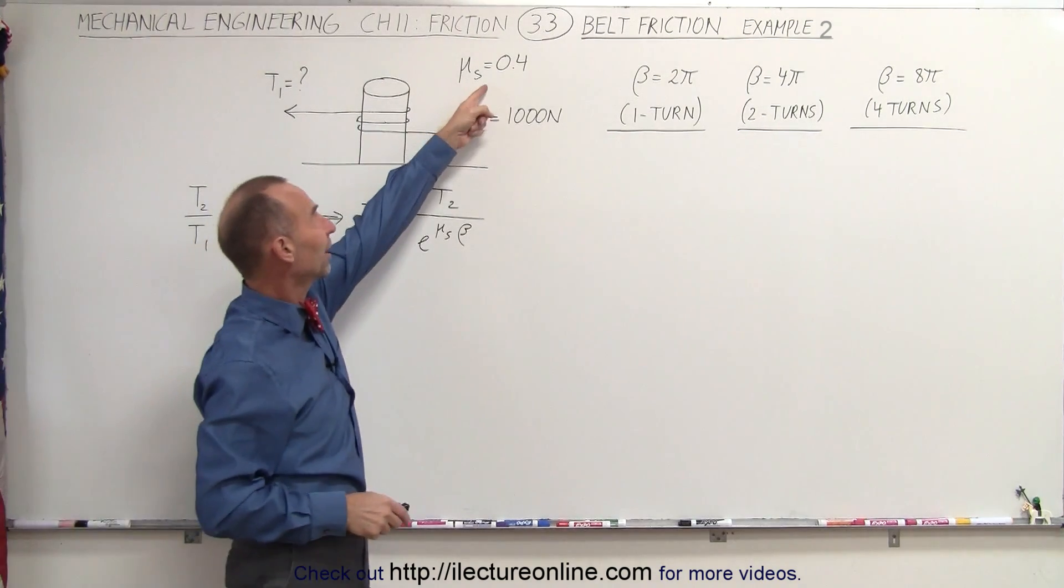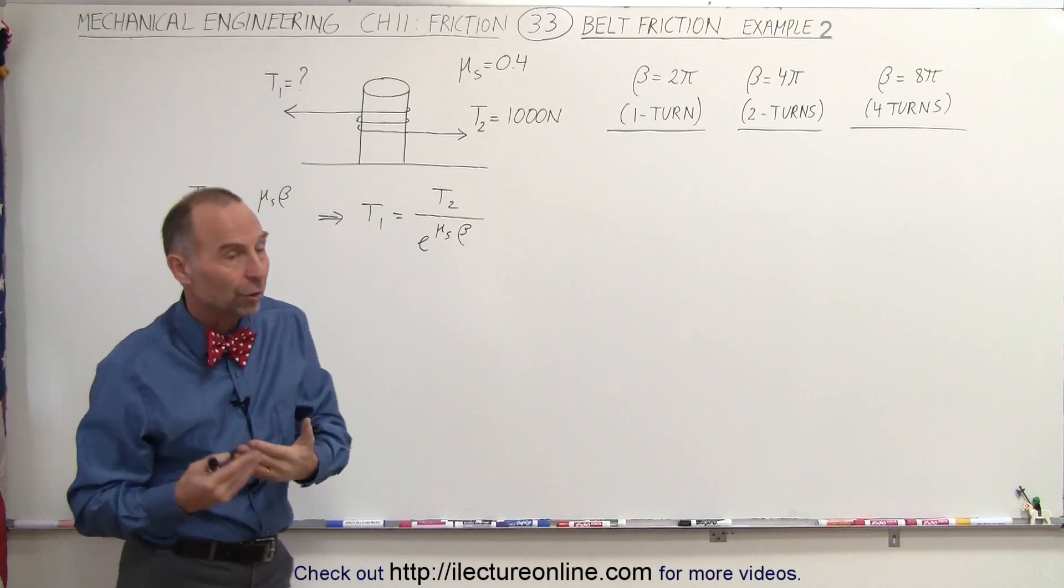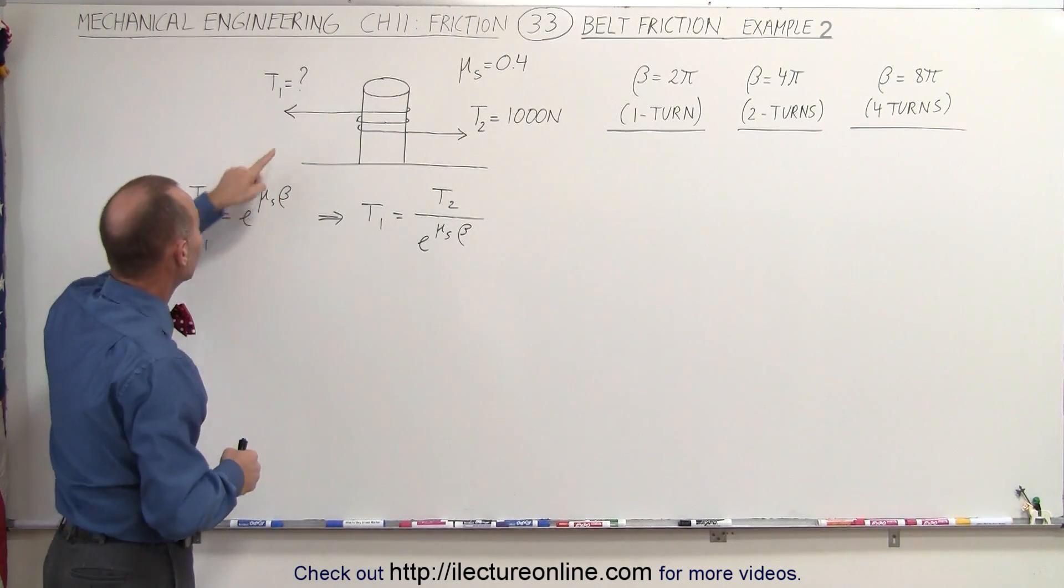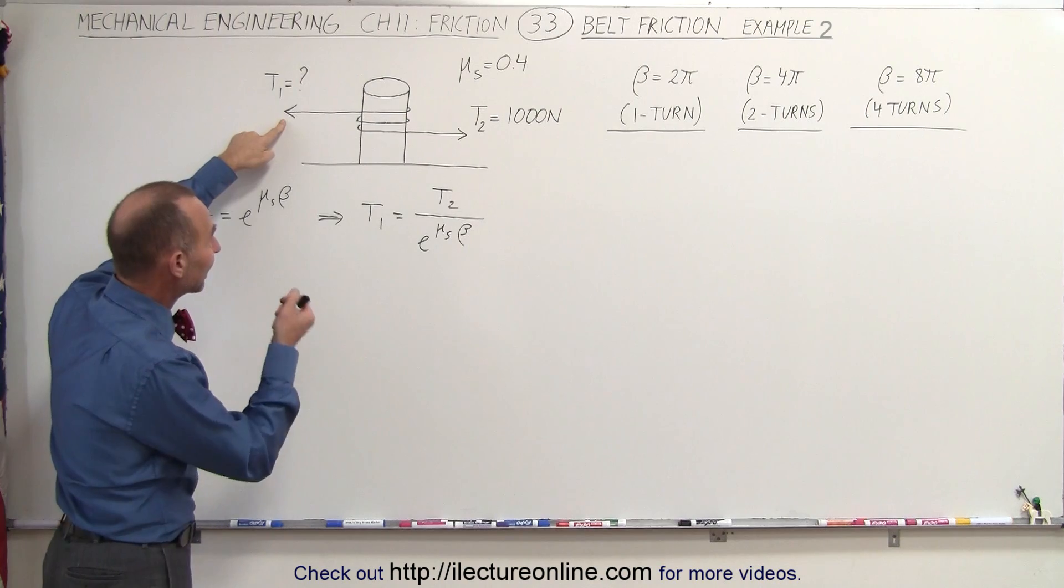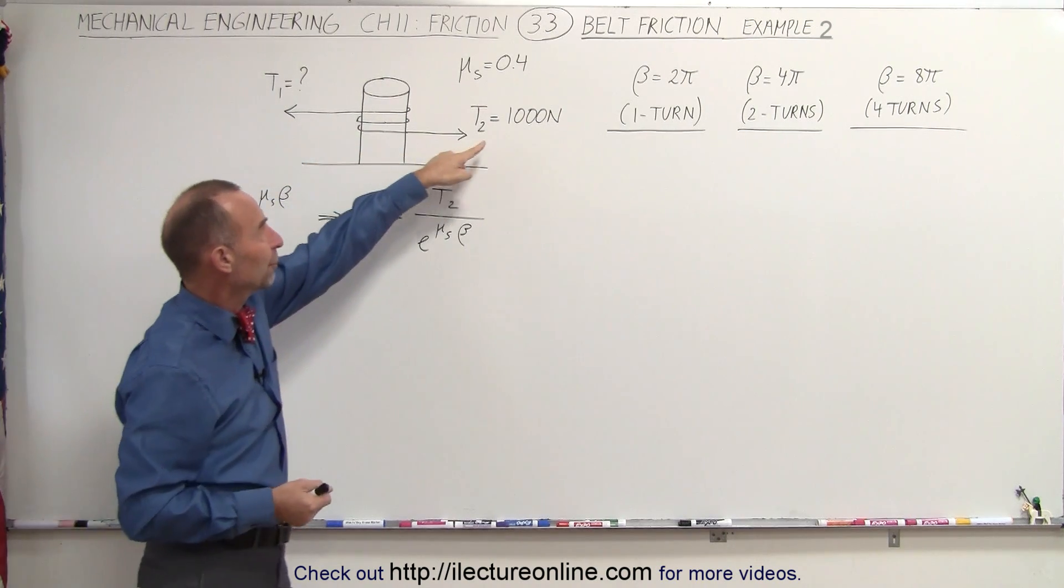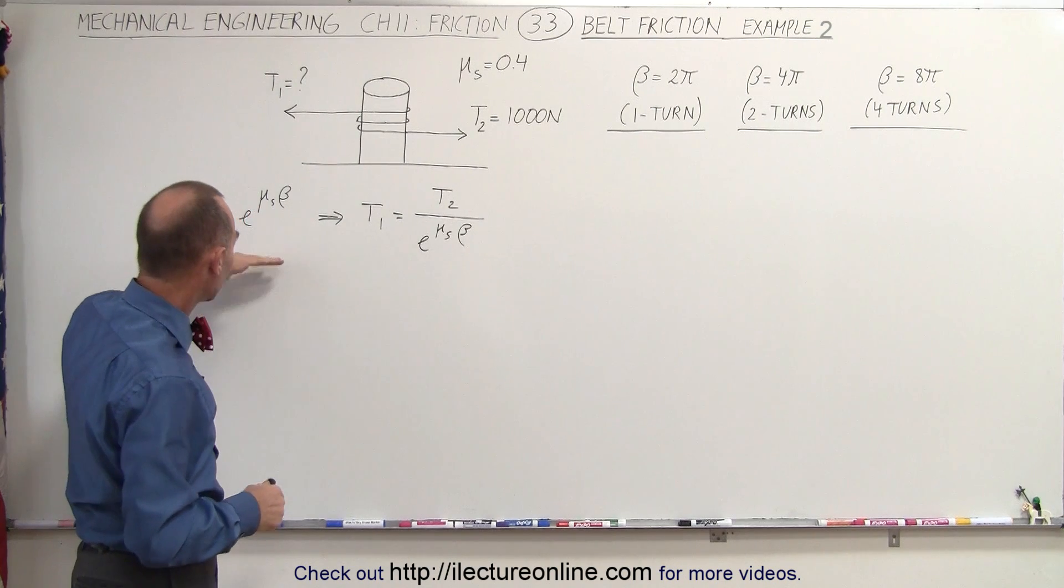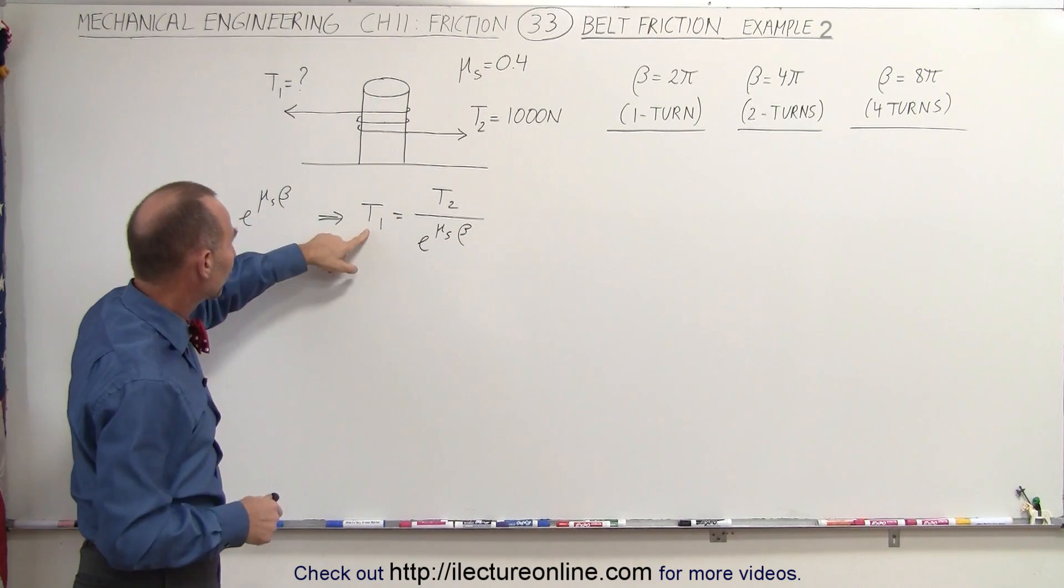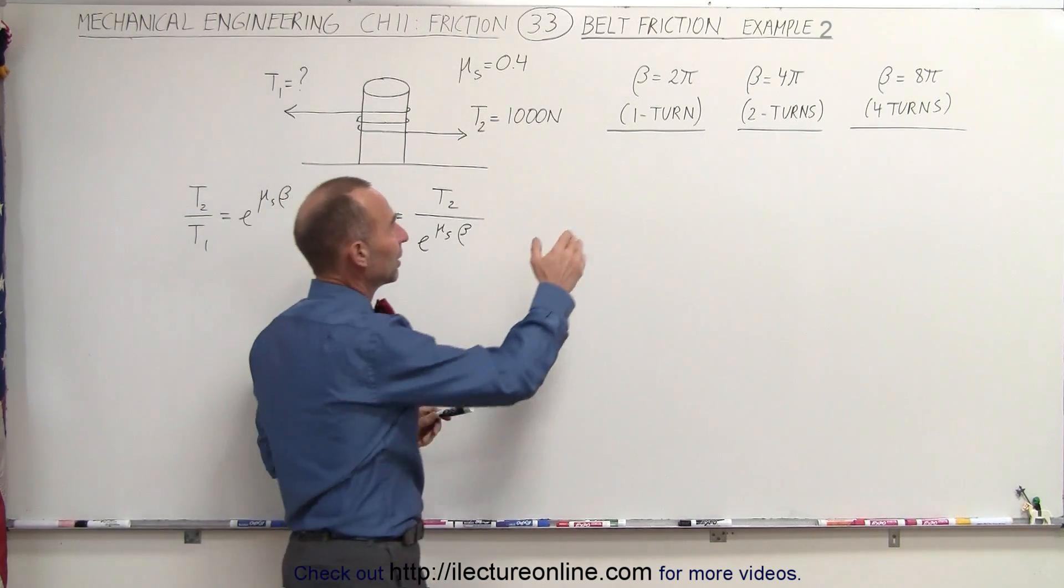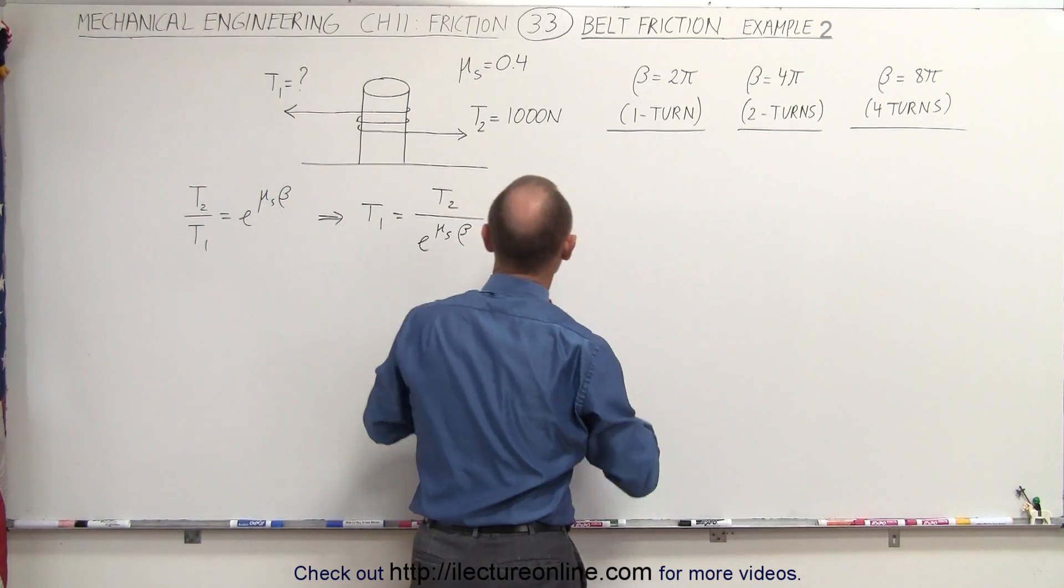We're going to keep the coefficient of static friction the same, and what we want to do is calculate what the tension will be over here in order to keep the rope from slipping if we apply a force of a thousand newtons on the other side. So again we use the same equation as before. We solved it for T1, and now we can calculate it for each of these three cases.